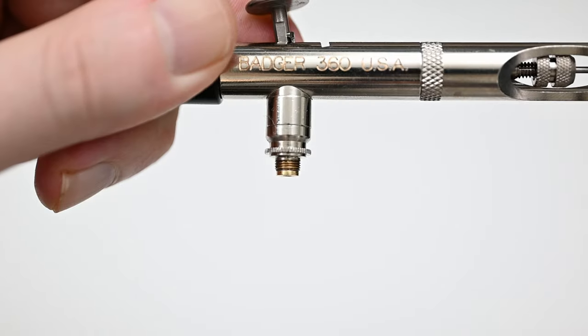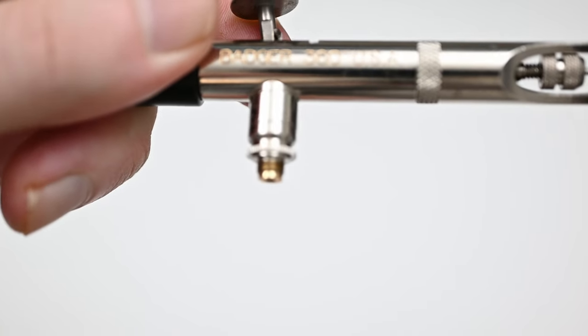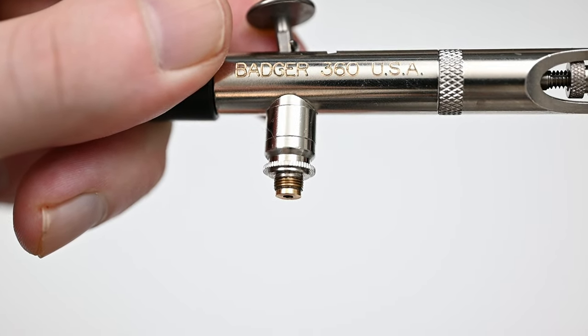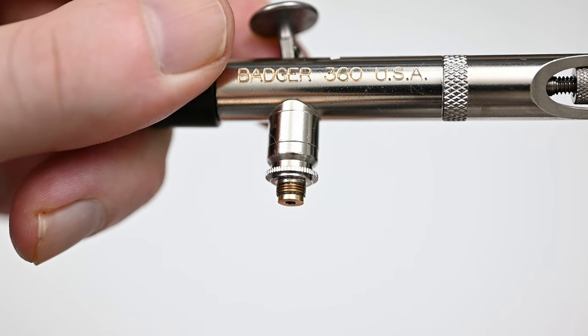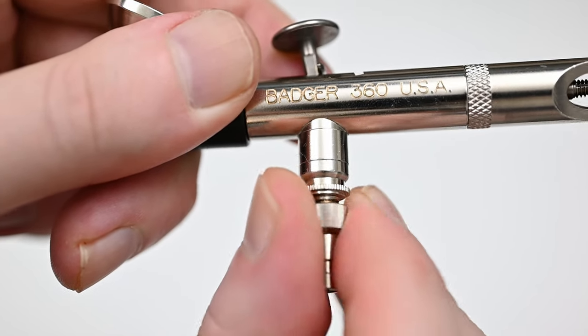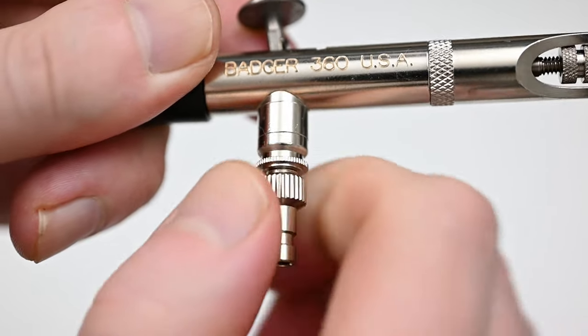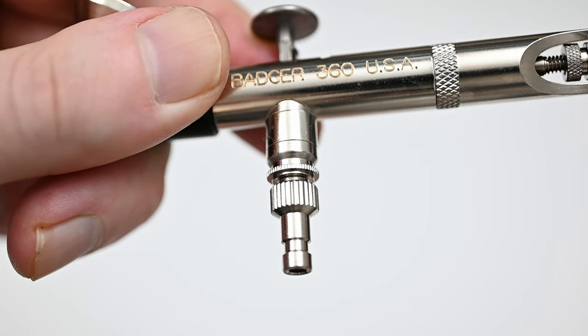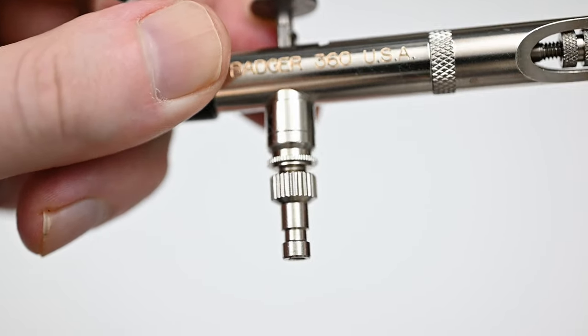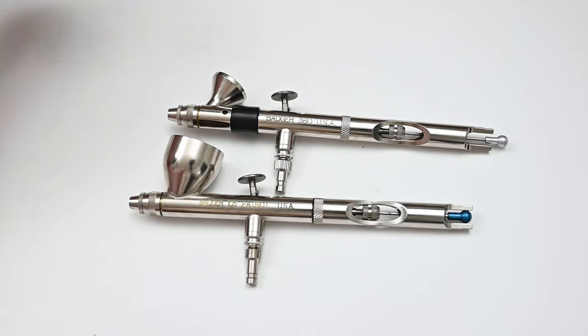One thing that I've never been a big fan of is that Badger has its own thread size when you're connecting your air hose. So what I do is buy one of these quick adapters made by Badger. There's even some third-party options out there. And this will fit into the other end of any standard quick adapter. I use the Iwata one connected to an Iwata braided hose, and this connection fits perfectly.